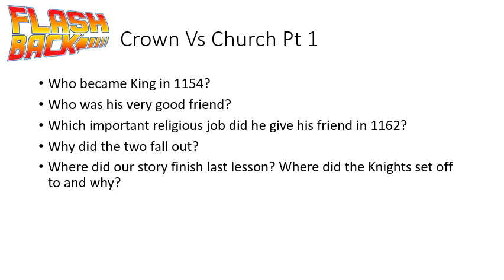The reason that the two men fell out was because King Henry wanted Thomas to let him change the church courts. He thought that the way people in the church were punished when they committed a crime was too soft, and he wanted to punish them harsher, but he didn't have control of the church courts. If he put his friend into the role of Archbishop, then he could get his friend to change how the church courts were run.